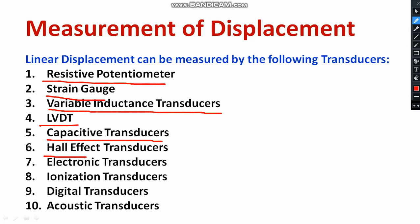You can also make use of capacitive transducers, Hall effect transducers, electronic-based transducers, ionization transducers, digital transducers, and acoustic transducers. These are the quite popular methods which are mainly used for measurement of linear displacement.